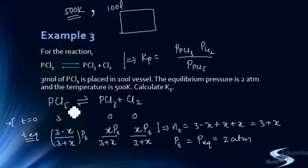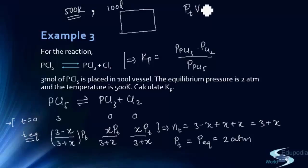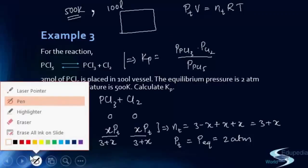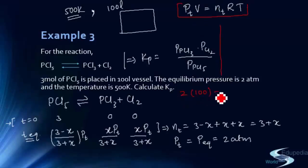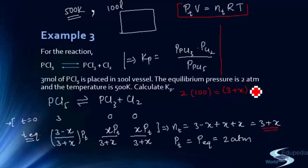To find x, we use the ideal gas equation: Pt × V = n_total × R × T. We know Pt = 2 atm, V = 100 L, and total moles at equilibrium = 3+x. This equation can be used to find x.